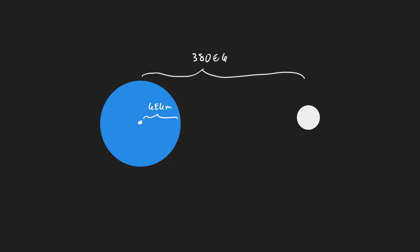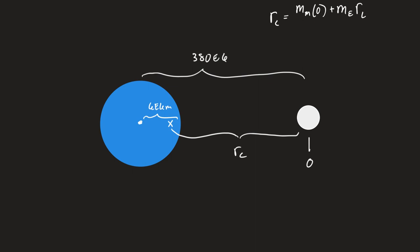A system without a fixed pivot point oscillates about the center of mass of the system. The center of mass of the Earth-Moon system is located near the surface of the Earth. That means the radius of curvature for the Moon is the distance from the center of mass to the Moon, not the full Earth-Moon separation distance. We would get that from the center of mass formula: setting the Moon's position as origin, it's (M_Moon · 0 + M_Earth · R_EM) / (M_Moon + M_Earth).